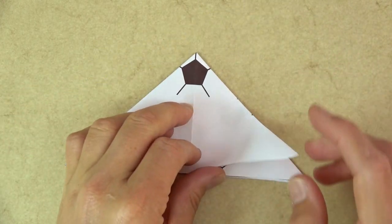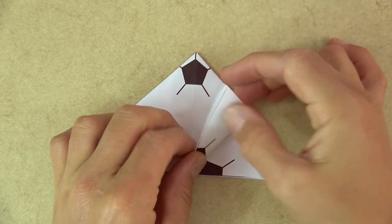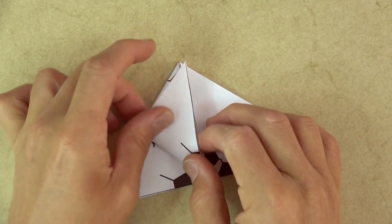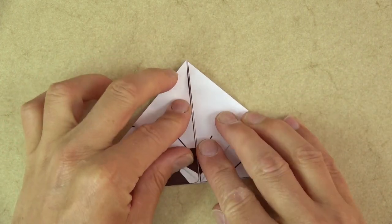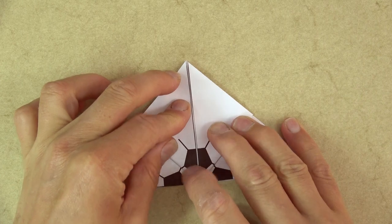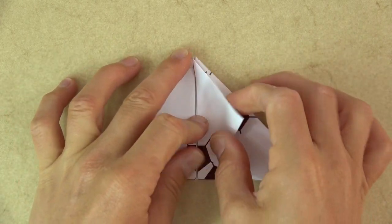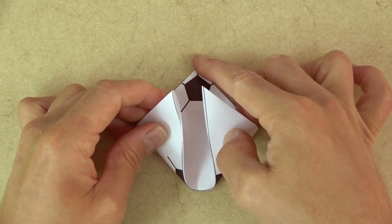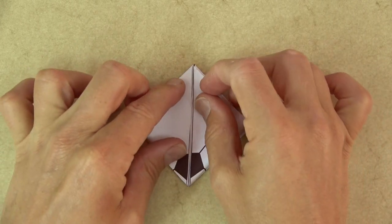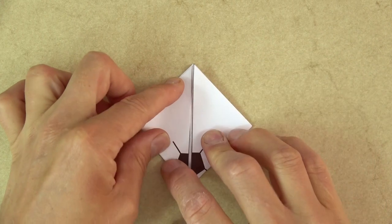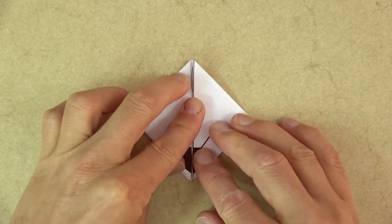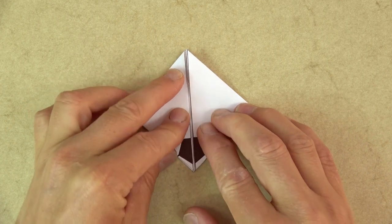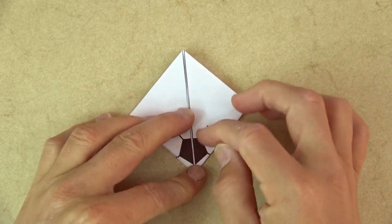Now let's make the water bomb. So fold this corner up to here. And repeat on this side. And turn over and fold these two flaps up to the top. And as you do, just try to line up this as a pentagon. So there's not a big white line in between.